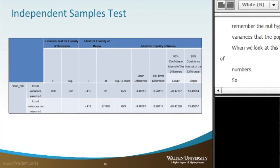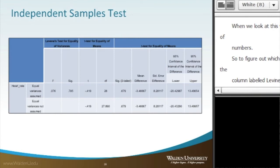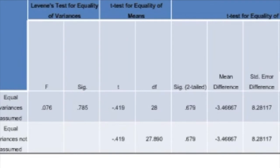So, to figure out which row to read from, we look at the column labeled Levene's test of equality of variances, and then you'll find that you'll see two smaller columns labeled F and SIG, and the SIG represents our p-value. So, look at the SIG column. That will only have one value.